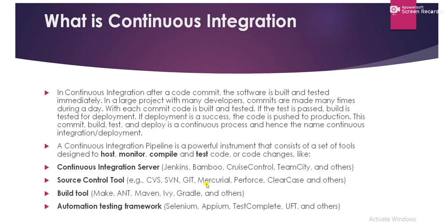As you know, we are following agile methodology, so code delivery is faster. In continuous integration, we use many different tools. For the CI server, Jenkins is the most popular. Other options in the market include Bamboo, Cruise Control, and Team City. But most companies are using Jenkins.